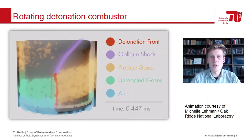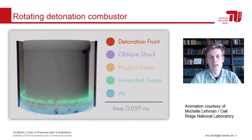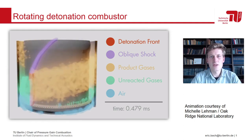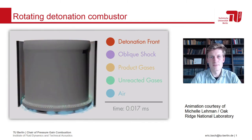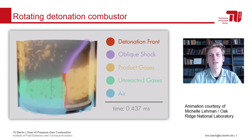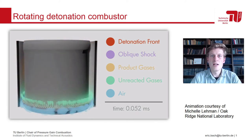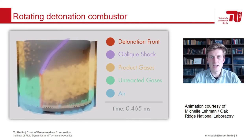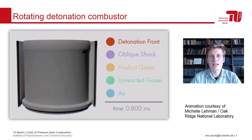Rotating detonation combustion is a promising implementation of the pressure gain combustion concept, and has the potential to significantly increase the efficiency of state-of-the-art combustion systems for propulsion and power generation. In an RDC, a detonation wave continuously travels around an annular channel, as shown in this animation. This process is sustained for as long as fresh reactants are supplied from the headend. At the aft end, high enthalpy product gas exits the combustor.